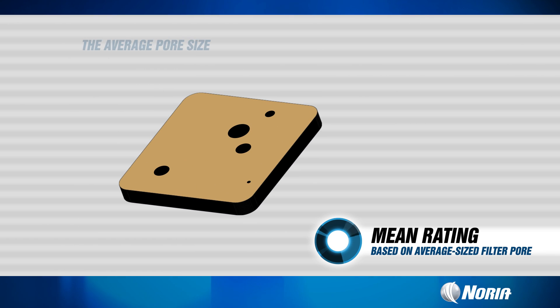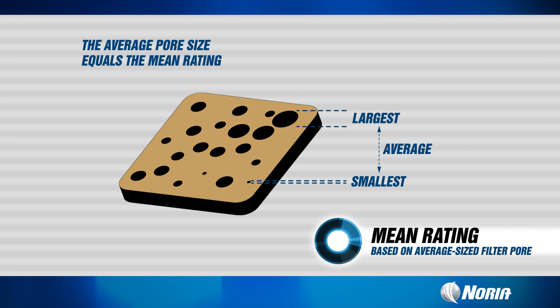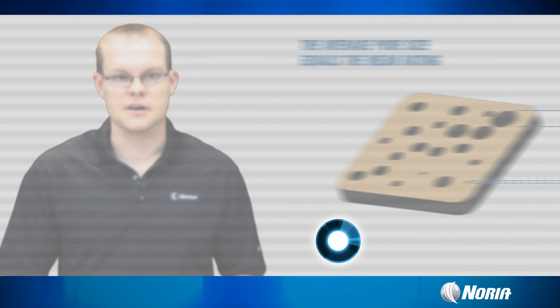The next rating system you're going to see, not as popular but you'll still see it, is called a mean rating. What a mean rating is, is basically they take the average pore size, and that's what the mean rating is. There are larger ones and smaller ones, but what you're looking at with a mean rating is the average of all those. It can still give you a pretty good idea of how well that filter is going to work.